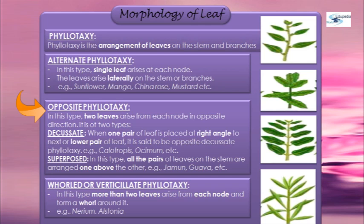This is called opposite decussate phyllotaxy. Decussate means one node bears two leaves, and they are placed at 90 degrees or right angles to the next upper pair of leaves. It is seen in Ocimum (tulsi) and Calotropis.